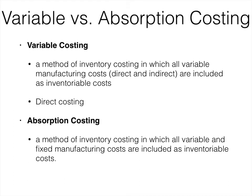Absorption costing is what is required by GAAP. However, absorption costing can allow managers to increase the value of their inventory, and by doing that the fixed costs are not expensed until products are sold. So we have this idea of variable costing that we can use internally — it omits the fixed cost portion, like rent on the factory, from being incorporated when we sell products. Fixed costs are expensed when incurred under variable costing. It helps us see whether we're just building up inventory to make our income look better, and even though that's not acceptable by GAAP, we can still use it internally for decision-making purposes.